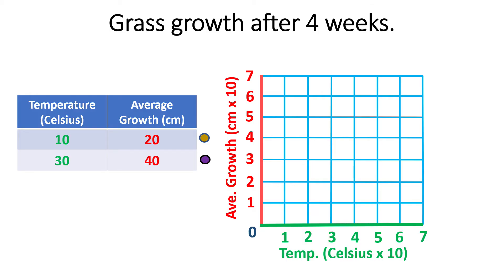The last step of the scientific method is to analyze and publish our results. In elementary and middle school, we analyze our results by graphing them, then looking at the graph to spot trends. We can see that warmer grass appears to grow faster. This would suggest that our hypothesis is correct. The final part of this step, and the entire scientific method, is to share our results.